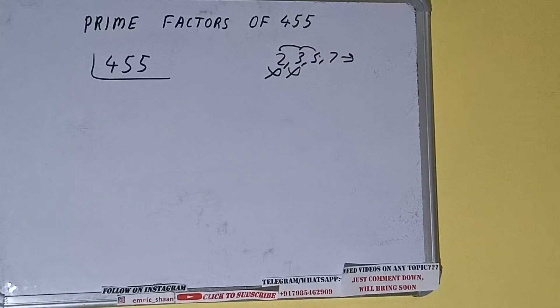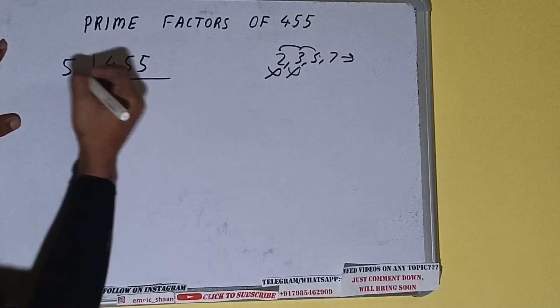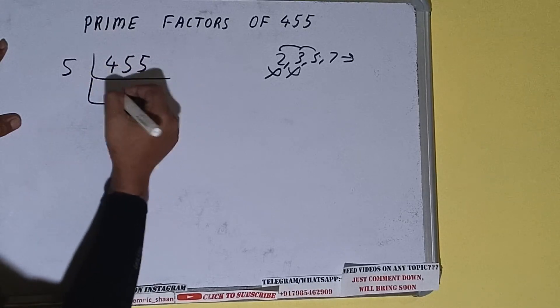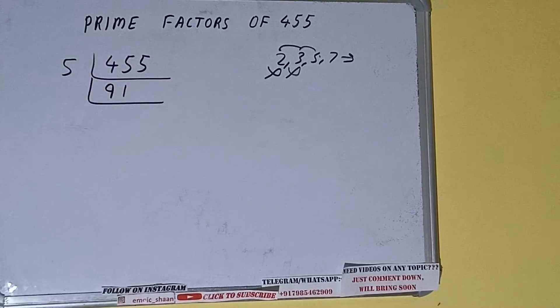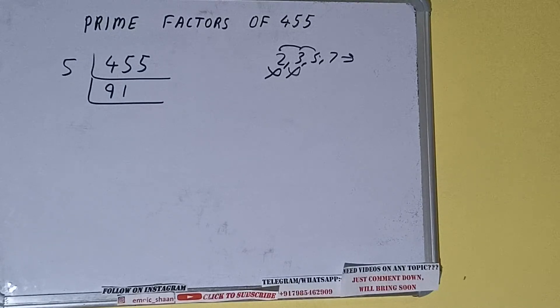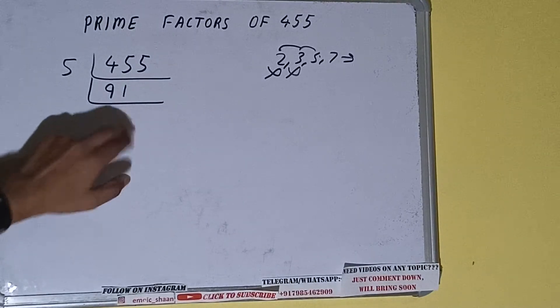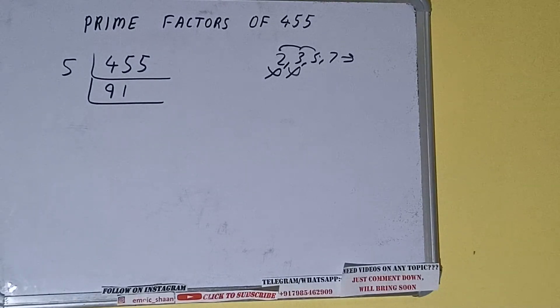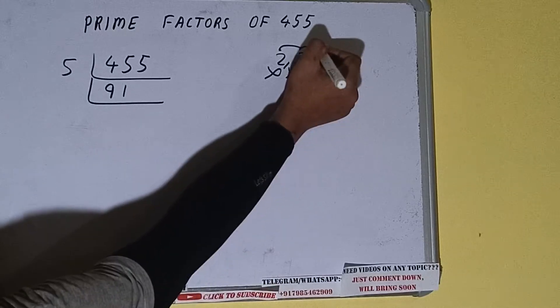So we divide by 5: 5×9=45, 5×1=5, giving us 91. Is 91 divisible by 5? The answer is no, because the last digit is neither 5 nor 0. So we'll check with the next lowest prime number, which is 7.